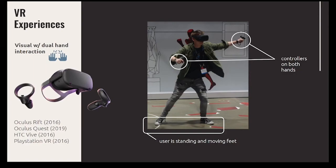Now we get into VR technology with dual hand interaction, so you can interact with both hands. The Oculus Rift came first, then the Oculus Quest; the HTC Vive came out around the same time as the Rift, as did PlayStation VR. Aside from controllers for both hands, the user can now stand and move around on their feet, getting into experiences that are more interactive.